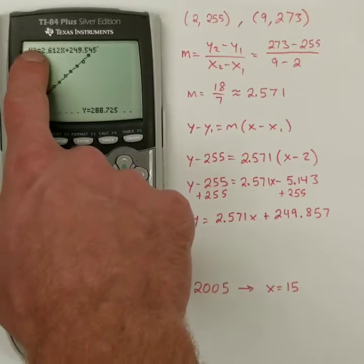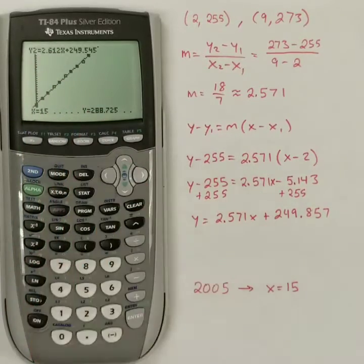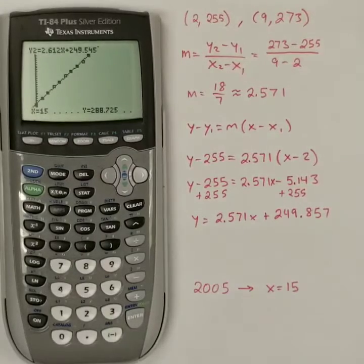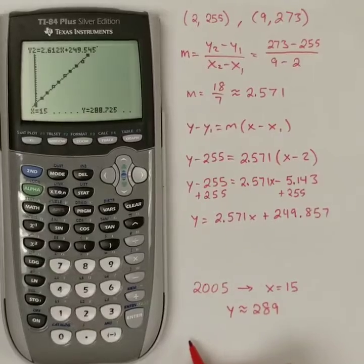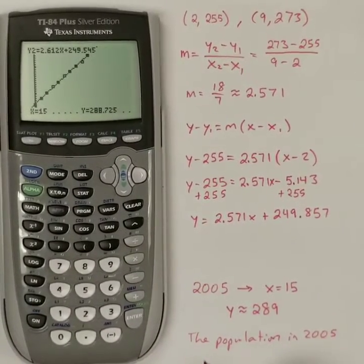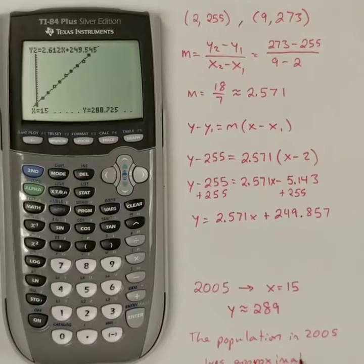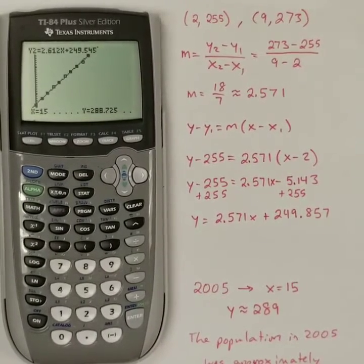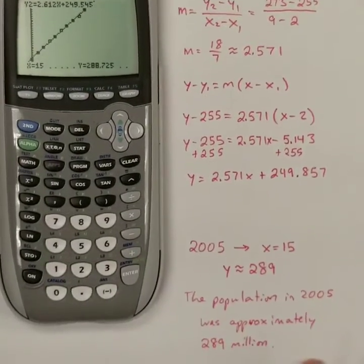And I got 288.725. Again, we're rounding all these to the nearest million, so I'm just going to call that 289. So Y is approximately 289, which means the population in 2005 was approximately 289 million. There you go. I can see that.